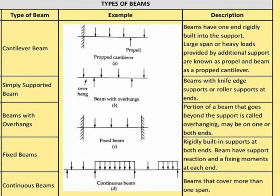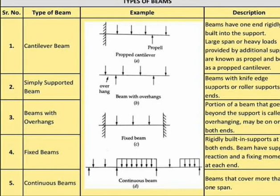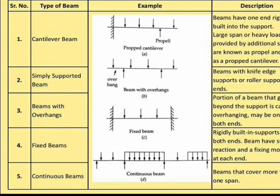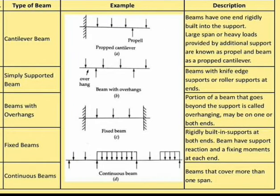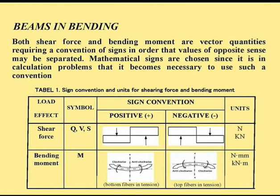A fixed beam has rigidly built-in supports at both ends, providing support reactions and fixing moments at each end. A continuous beam, shown in figure d, is a beam that covers more than one span.